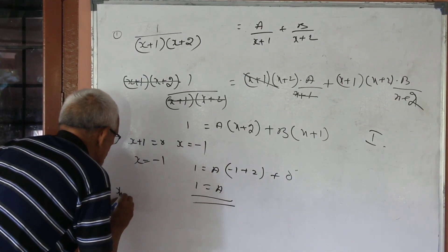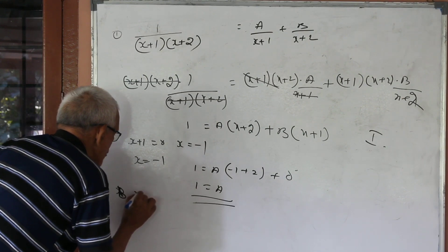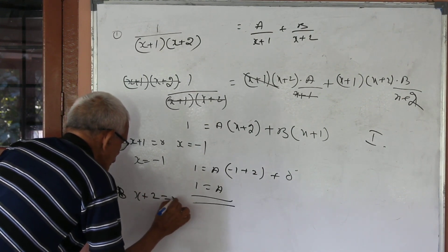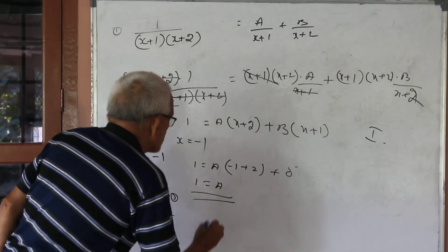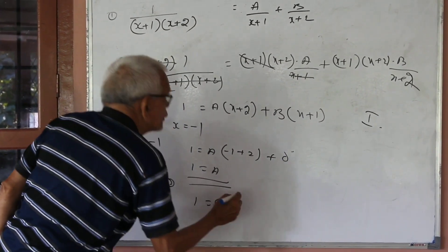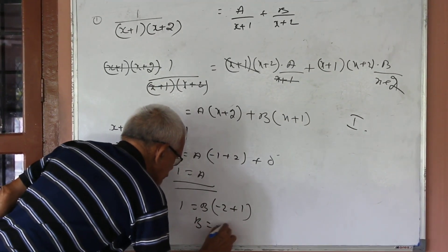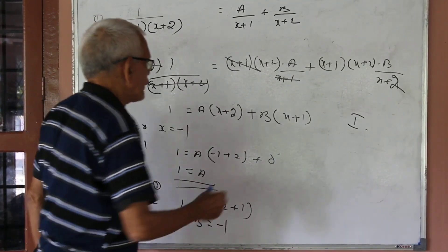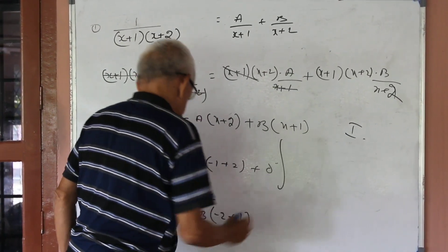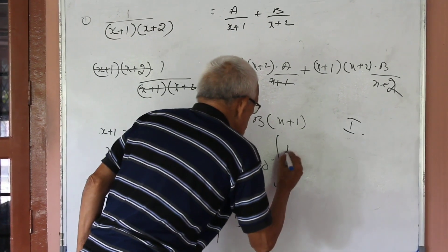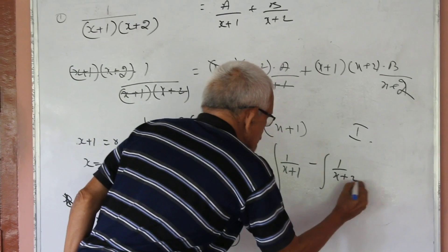Substituting x = -1: 1 equals A into (minus 1 plus 2), so A equals 1. To get B, put x plus 2 equal to 0, so x equal to minus 2. 1 equals B into (minus 2 plus 1), so B equals minus 1. Integrate it all.